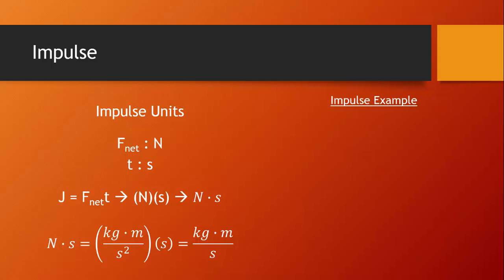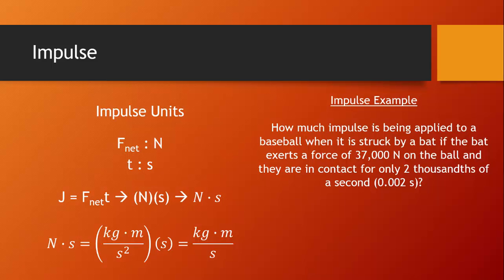Let's take a look at an example of an impulse problem. How much impulse is being applied to a baseball when it is struck by a bat if the bat exerts a force of 37,000 newtons on the ball and they are in contact for only two thousandths of a second? Here we go. J equals F net T. Plug in the 37,000 newtons and the .002 seconds and we'll find that the impulse applied to the baseball was 74 newton seconds.